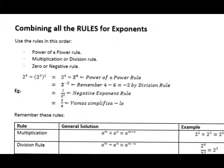Today we're going to be discussing how we combine all the rules for exponents in order to solve more complex problems. When we use the rules, we must start by using the power rule, then the multiplication or division rule, then the zero or negative exponent rule — in that order.